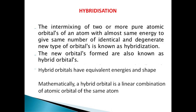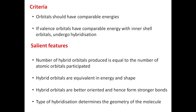The number of atomic orbitals that intermix equals the number of hybrid orbitals produced. Hybrid orbitals have equivalent energies and shapes. Valence orbitals of similar energy participate in hybridization. The number of atomic orbitals produced is equal to the number of atomic orbitals that participate. Hybrid orbitals are better oriented and hence form stronger bonds.